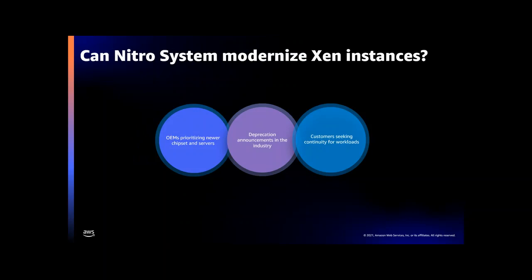When we talk with customers about EC2 and our roadmap, they would often say: this is all great — your latest instances have all the bells and whistles from the dedicated Nitro cards and the Nitro hypervisor. What about all of those previous generation instances that launched before the introduction of the complete Nitro system? Many of our customers have built their applications on top of, for example, C3 or even M1, and those applications have been running fine for many years. Many of those customers don't have the time, resources, or perhaps even the expertise to redo everything and port their workload to a new instance running on the Nitro system.